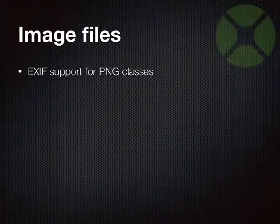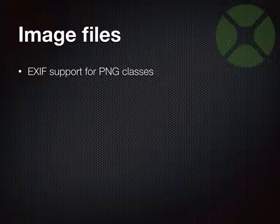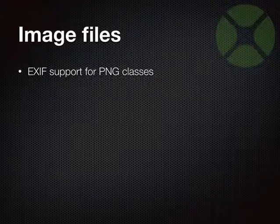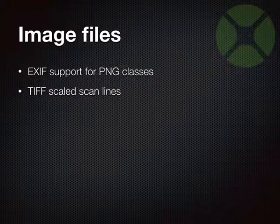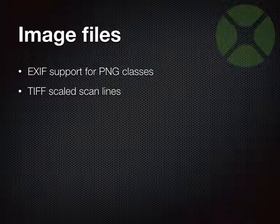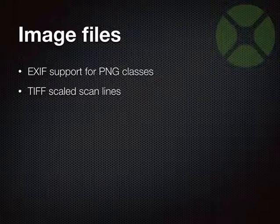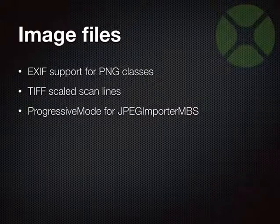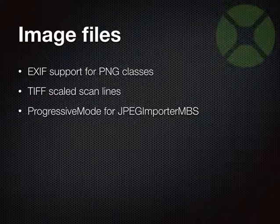We have new functions for image files. We have EXIF support for our PNG classes so you can get the EXIF metadata block from a PNG file and embed it in another PNG file — useful when converting from JPEG to PNG while preserving EXIF data. Our TIFF classes can return scaled scanlines, very useful for getting a preview of a very large TIFF file by reading every second pixel. We got progressive mode support for our JPEG importer so we can show pictures while they are loading.